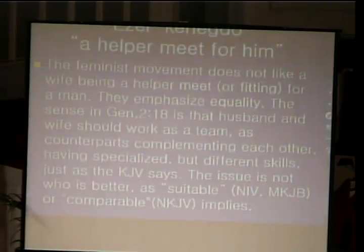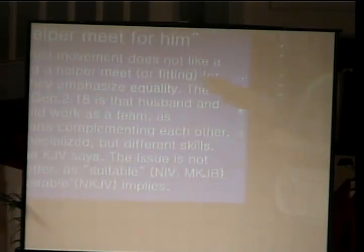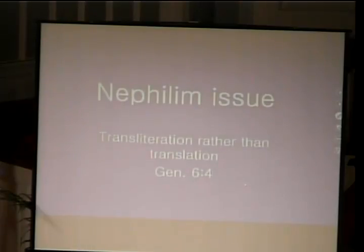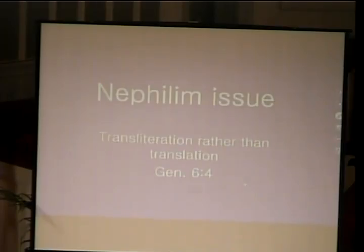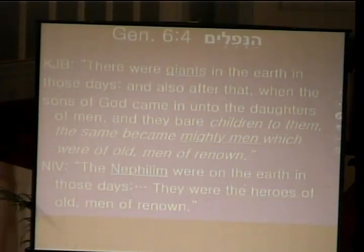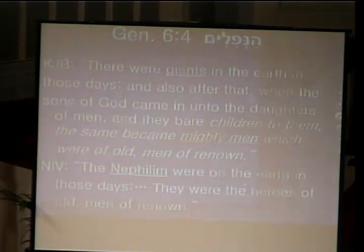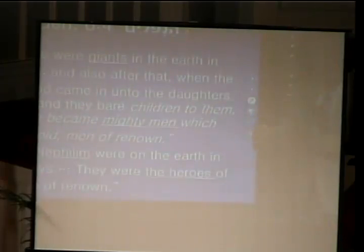The King James Bible is the best translation here. Another issue is from Genesis chapter 6:4 — the Nephilim question. The issue is transliteration rather than translation. The King James Bible says 'giants.' Other translations do not translate the word but instead use the transliteration 'Nephilim,' leaving readers asking what it means. Nephilim means 'fallen one.'